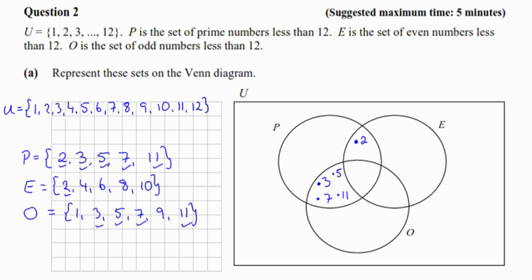Now we're going to move on to E. So 2 is already in for us. 4 is not in P or O, so we put it in here. 6 is not in P or O. 8 is not in P or O. And 10 is not in P or O.